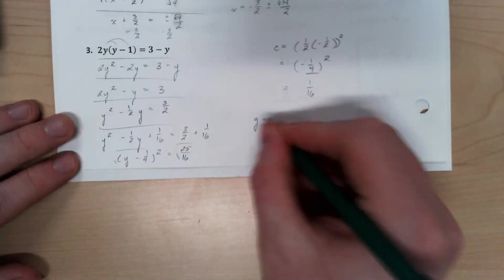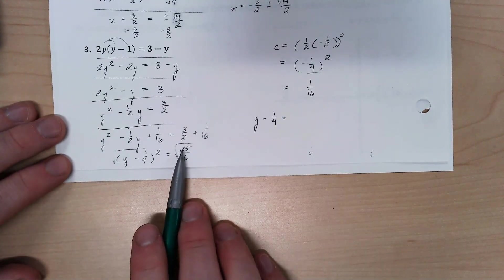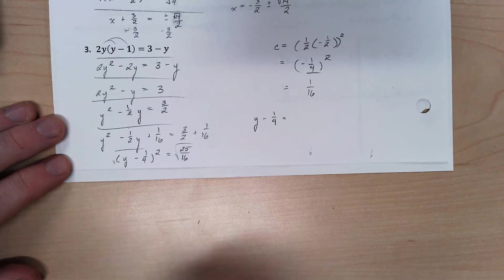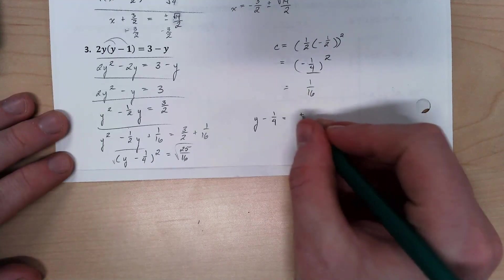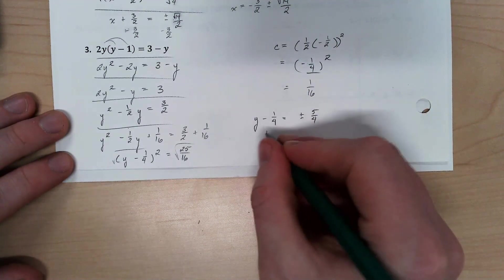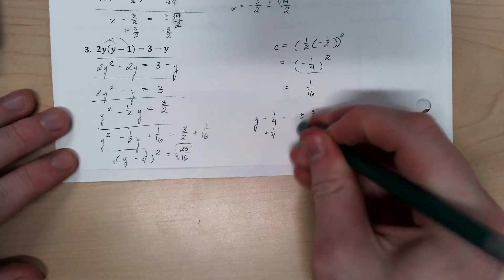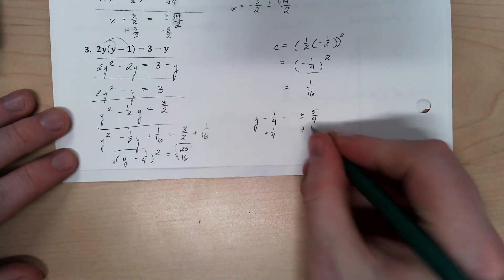And I have y minus 1 fourth equals, well, that's what's nice about this, a perfect square over a perfect square. So it equals plus or minus 5 over 4. Add my 1 fourth over, oops, not plus or minus, just adding that 1 fourth over. And that puts us in a really cool spot.